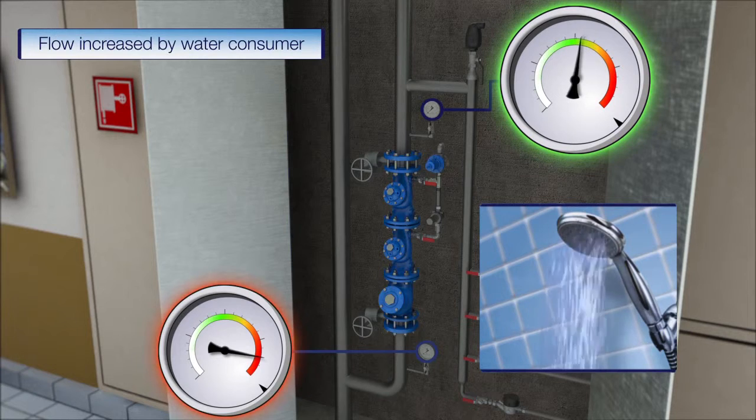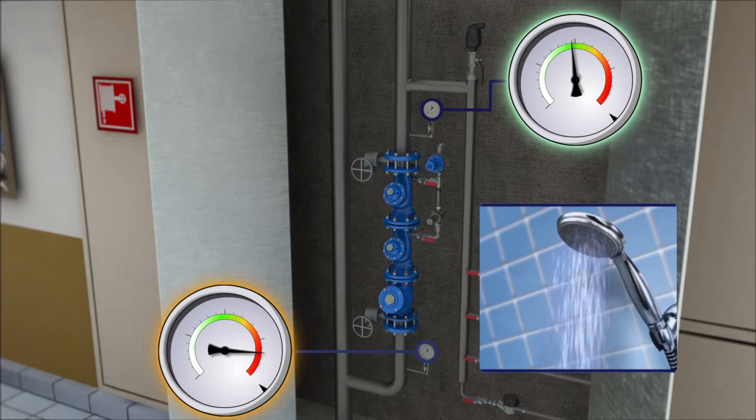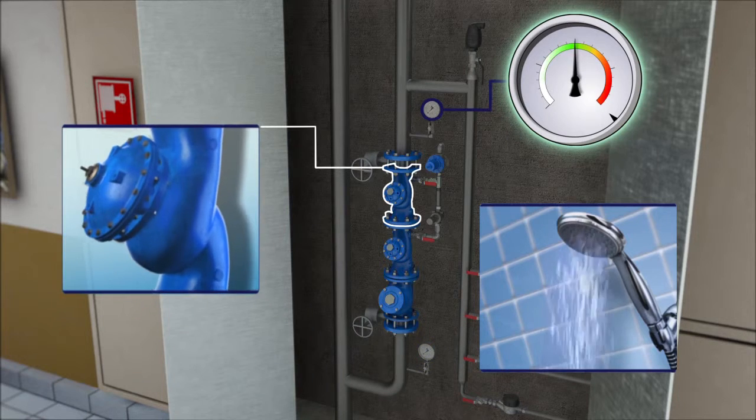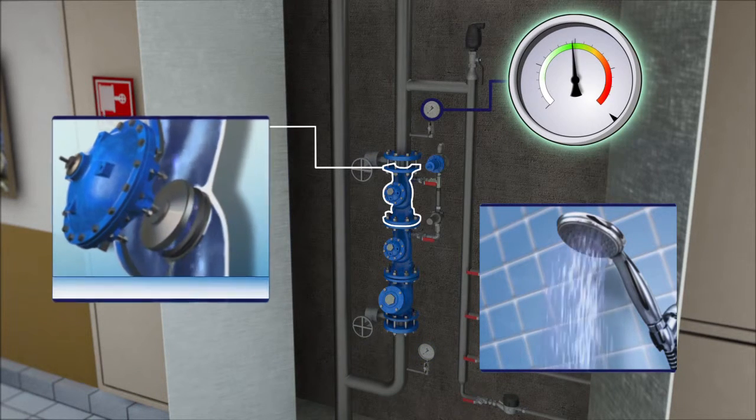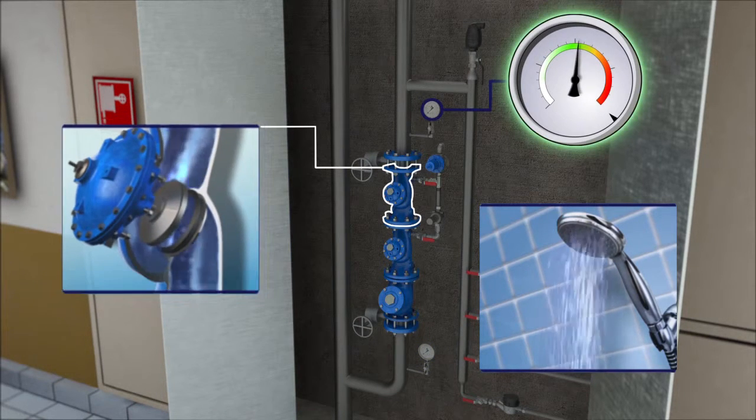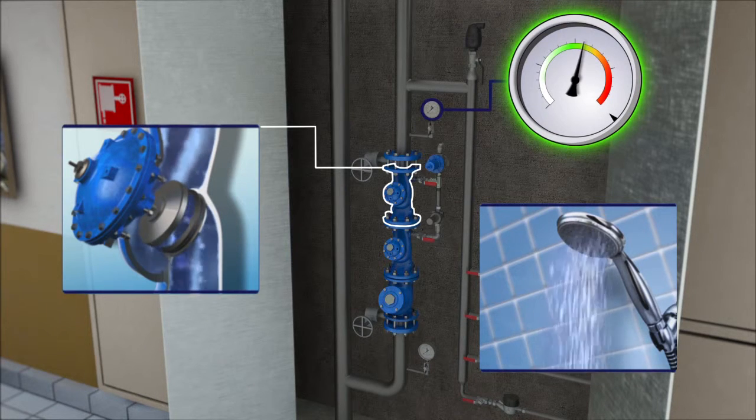When the residents start using water, the flow increases and the downstream pressure drops relative to the flow rate increase. The pressure reducing valve increases the pressure until the downstream pressure is back to normal level.